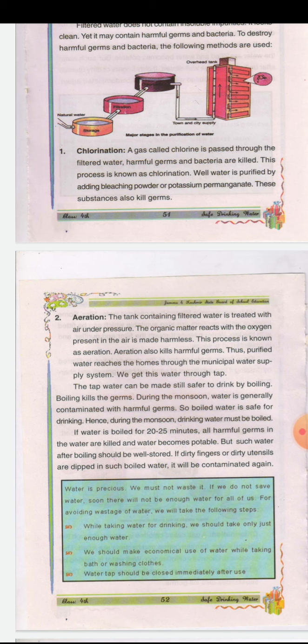When we use well water or tap water, we add bleaching powder or potassium permanganate powder to it. This also kills germs. We can use this method for well water or tank water as well.